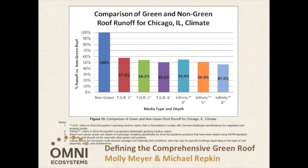Comprehensive green roof systems have better stormwater retention than equal depths of typical green roof systems. For example, a 3-inch deep comprehensive green roof retains as much stormwater as a 5-inch deep extensive or semi-intensive system, and a 5-inch deep comprehensive system retains as much stormwater as an 8-inch deep intensive system. This information is based on a report from the Seattle office of the engineering firm AMEC, which has done similar studies on other green roof systems and presented its work at previous Cities Alive conferences.